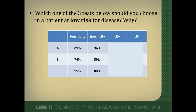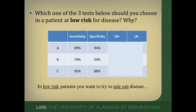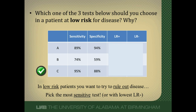Let's see how well you've learned these concepts with two questions. First: there are three possible tests — A, B, or C — for a patient who has low risk for disease. Which test would you choose, and why? Pause the video and come up with your rationale. The answer is C, because this patient is low risk so we want to rule out disease, which means we pick the most sensitive test or the one with the lowest negative likelihood ratio. Test C has the highest sensitivity at 95% and the lowest negative likelihood ratio among all tests. Sensitivities and negative likelihood ratios go hand in hand.